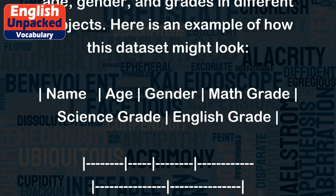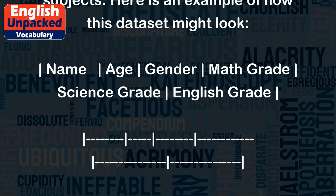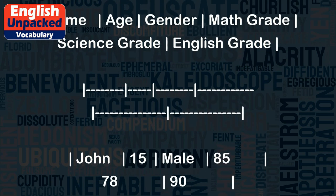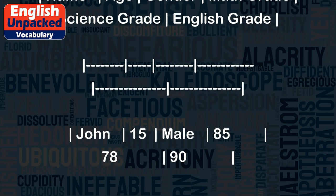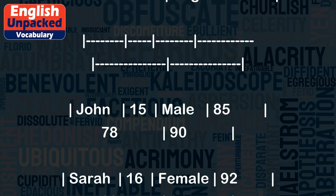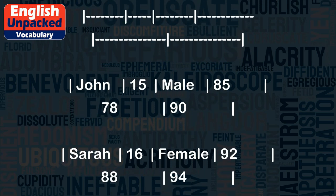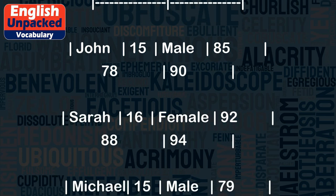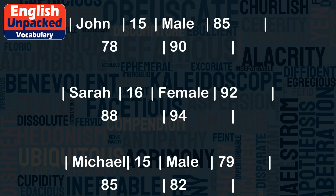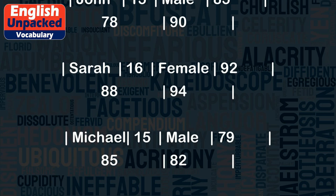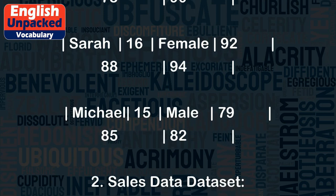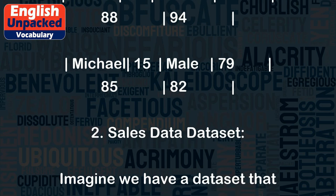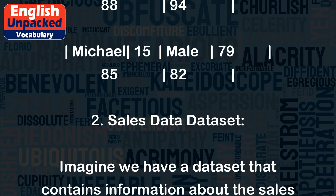Here is an example of how this data set might look: Name, Age, Gender, Math Grade, Science Grade, English Grade. John, 15, Male, 85, 78, 90. Sarah, 16, Female, 92, 88, 94. Michael, 15, Male, 79, 85, 82.